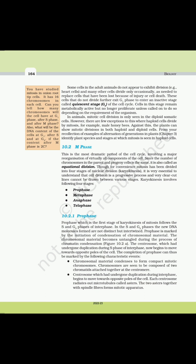10.2 M Phase. This is the most dramatic period of the cell cycle, involving a major reorganization of virtually all components of the cell. Since the number of chromosomes in the parent and progeny cells is the same, it is also called equational division. Though for convenience mitosis has been divided into four stages of nuclear division (karyokinesis), cell division is a progressive process and clear-cut lines cannot be drawn between various stages.